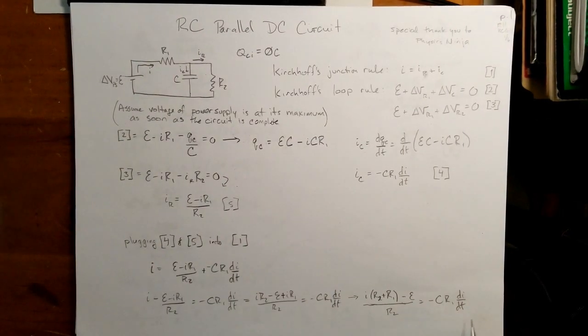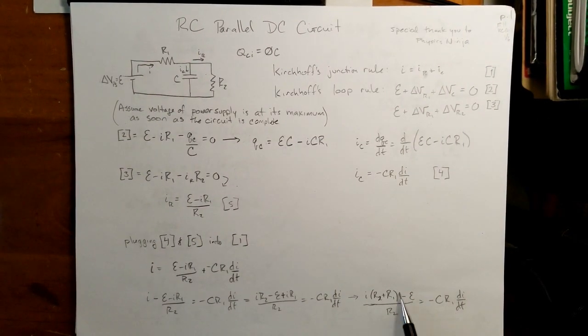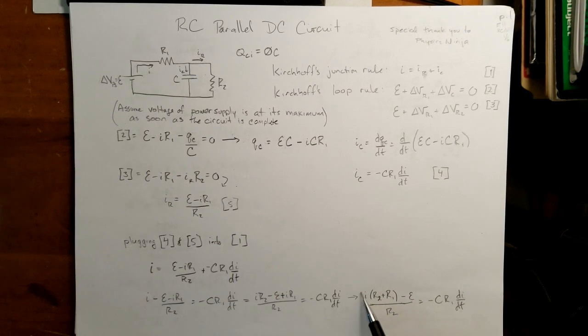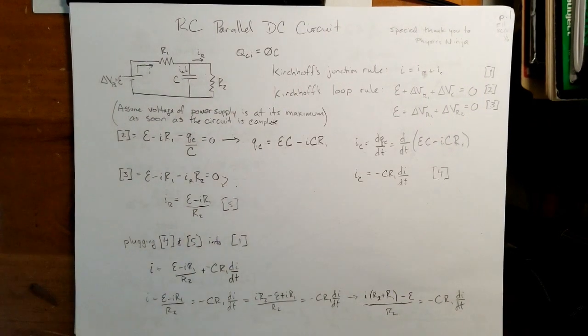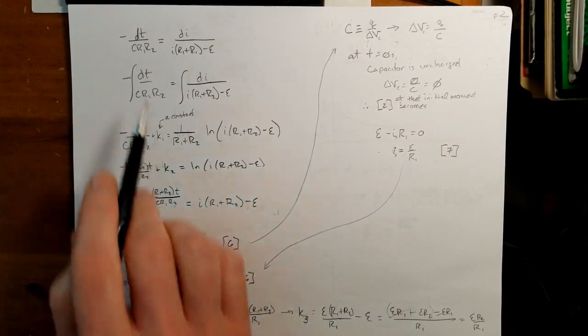And at this point, it's obviously not finished, but we need to get the I's on one side and not I's on the other, so I'm going to take my numerator here and bring this down, and then I'm going to take my negative CR1, bring this over, and the dt over to the left-hand side, and we end up with this.